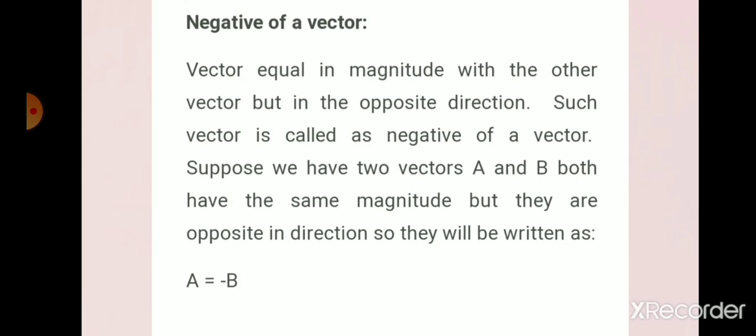Negative of a vector. A vector equal in magnitude with the other vector but opposite in direction can be called as the negative of a vector. Suppose if we have two vectors A and B both having the same magnitude but they are oppositely directed, then we can write vector A is equivalent to negative of vector B.